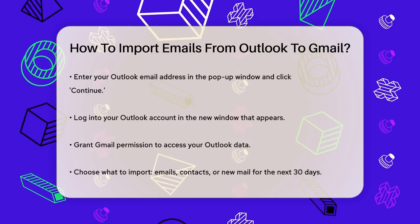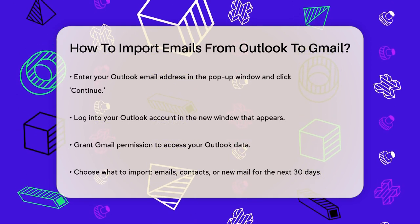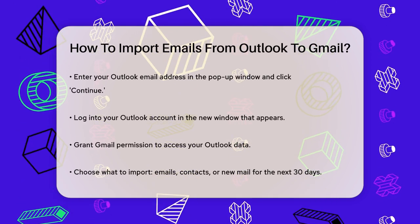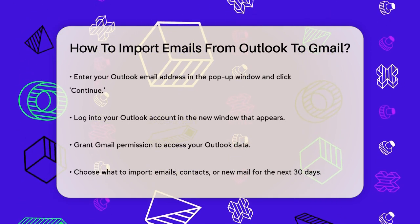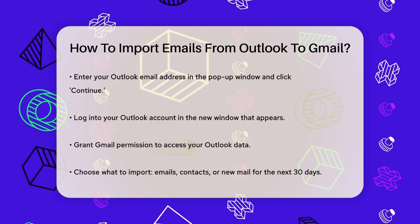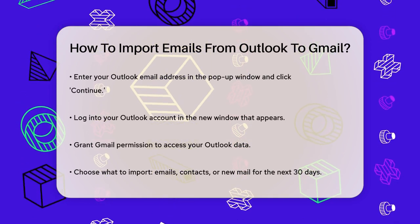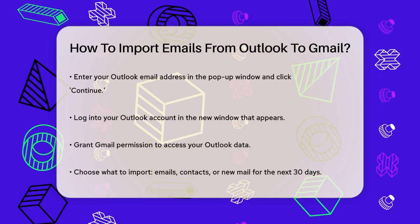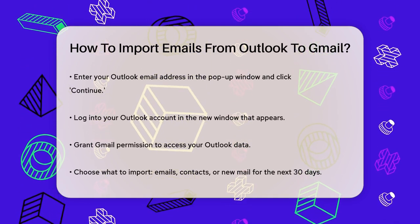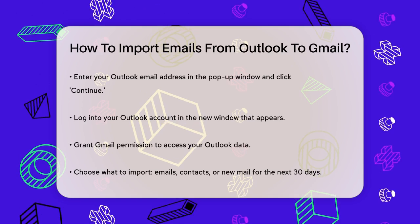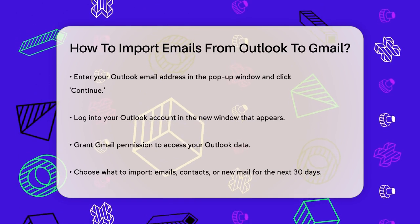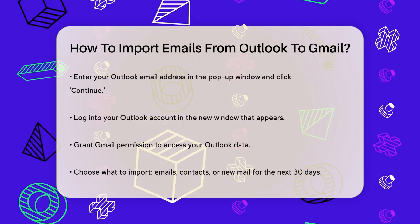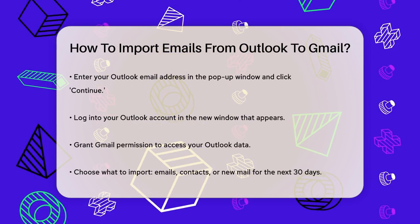Give Gmail permission to access your Outlook data. After granting permission, you'll be taken back to Gmail, where you'll see a new window guiding you through the next steps. Here, you can choose what you want to import, such as emails, contacts, or even new mail for the next 30 days. Once you've selected what you want to import, click Start Import.